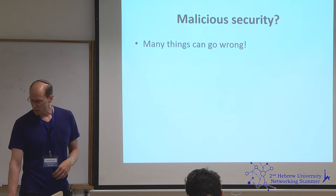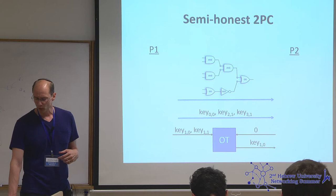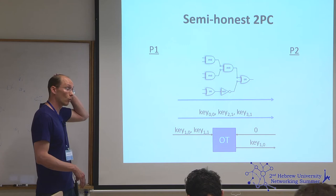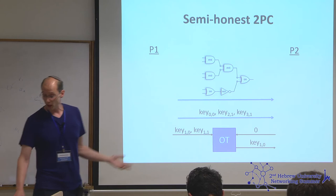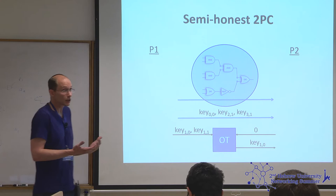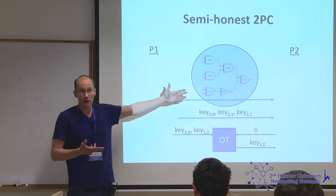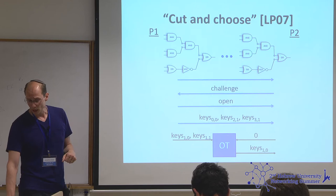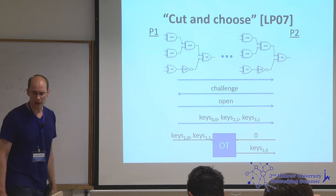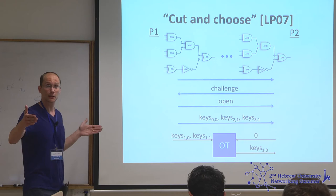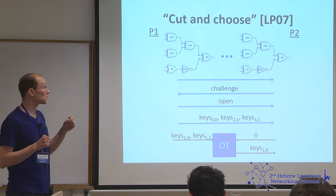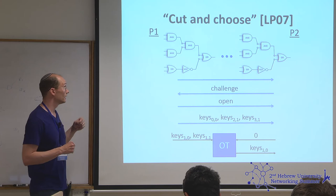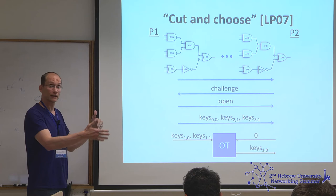Malicious security is a very interesting question. Going back to the semi-honest two-party protocol: P1 generates a garbled circuit and sends it to P2. The obvious question is: if P1 is malicious, it can completely modify the garbled circuit — in particular, generate a garbled circuit for any function it likes, such as f(x,y) = y, learning the other party's input. One general way of dealing with this, first analyzed in 2007, is the idea called cut-and-choose, where P1 is forced to send many independent copies of a garbled circuit.